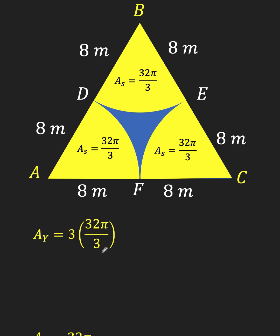Simplifying, the total area that is shaded yellow here is 32π. Now, we are after this blue shaded region.